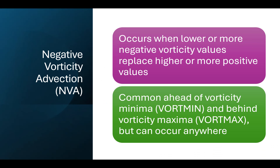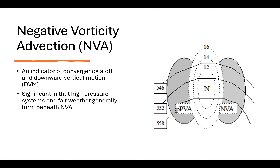With negative vorticity advection, on the other hand, this occurs when lower or more negative vorticity values replace higher or more positive values. NVA — negative vorticity advection — is usually common ahead of vorticity minimums, the letter N on the vorticity chart, and behind vorticity maximums, the letter X, but can occur anywhere. NVA is an indicator of upper level convergence and downward vertical motion in the atmosphere. High pressure systems and fair weather generally form beneath areas of NVA.